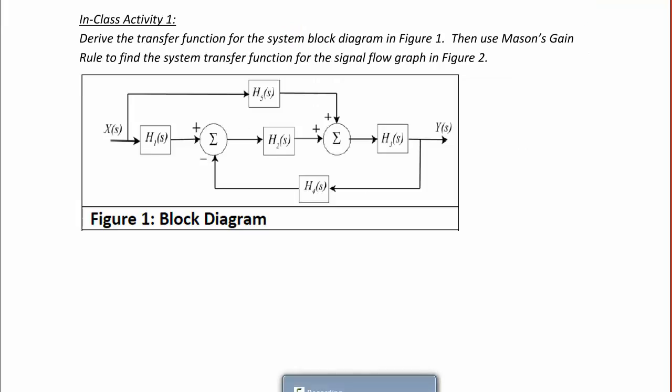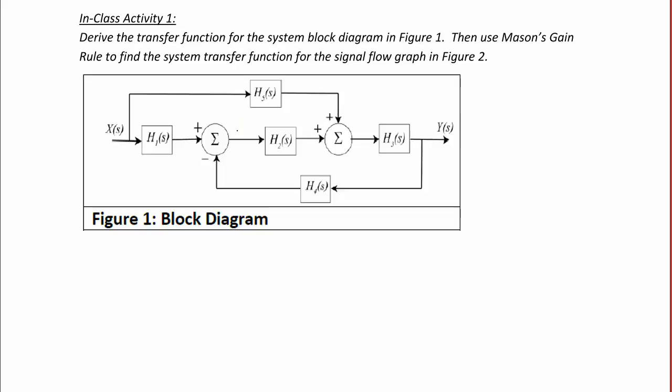In Class Activity 1. Derive the transfer function for the system block diagram in Figure 1. Then use Mason's gain rule to find the system transfer function for the signal flow graph in Figure 2. So first, for Figure 1, we're going to label the outputs of the summers. So I'm going to label this output E.